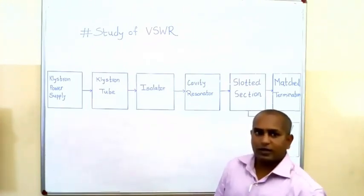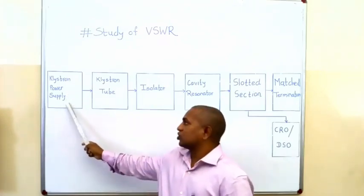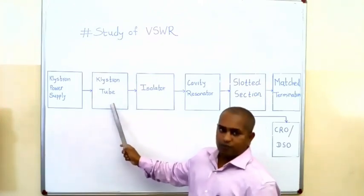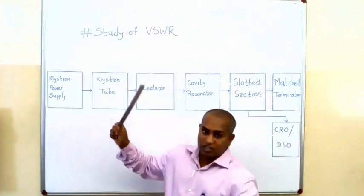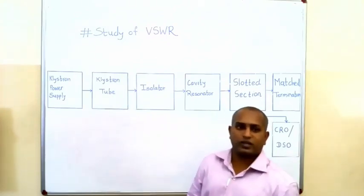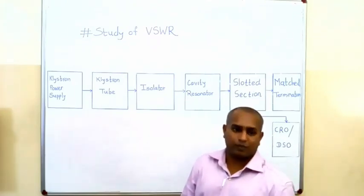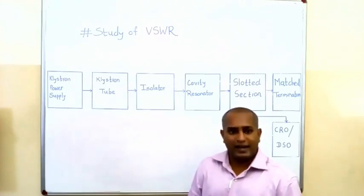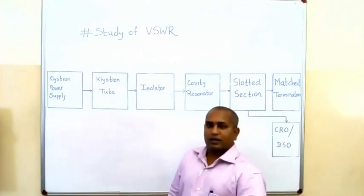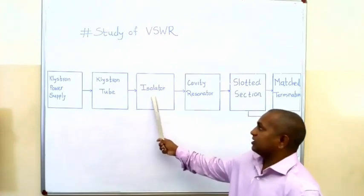Our first block is nothing but a Klystron power supply — we know the use of this power supply. The second block is a Klystron tube, also known as a Reflex Klystron tube. This tube acts as an oscillator and generates an electromagnetic signal at X band, that is from 8 GHz to 12 GHz, which is our microwave frequency.